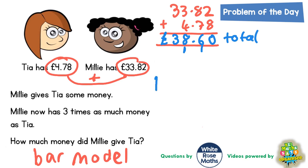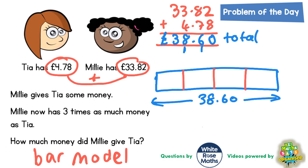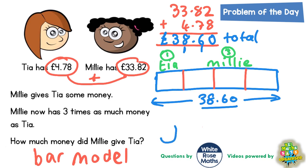Now this will help us because if we draw the bar, we know the total bar must be worth £38.60. Millie's got three times as much as Tia, so if we split the bar into four sections, Tia has one section and Millie has three sections — three times as much. That makes sense: Tia has one section, Millie has three sections, so the total bar has four sections. We need to split £38.60 into four sections — in other words, divide it by four.